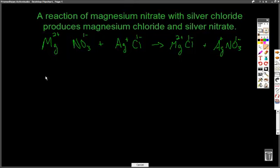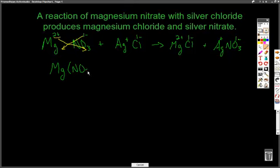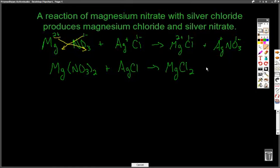Now that we have all the charges, we want to write proper formulas. In writing proper formulas, we take the values that don't add up to 0 and bring them down to their respective elements. So this first formula is going to be Mg(NO3)2. That's going to react with silver chloride — that's a 1 to 1 ratio, so that's just AgCl. Next, magnesium chloride: the chlorine gets a 2, so MgCl2. And lastly, 1 to 1 ratio adds up to 0, so it's AgNO3.